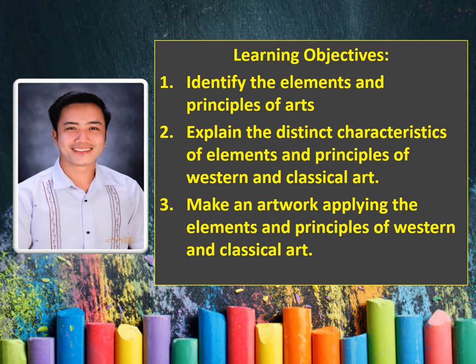Before we proceed to our lesson, let me first read our learning objectives. Identify the elements and principles of arts. Explain the distinct characteristics of elements and principles of Western and Classical Art. And make an artwork applying the elements and principles of Western and Classical Art.